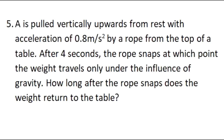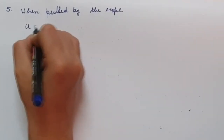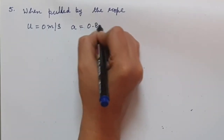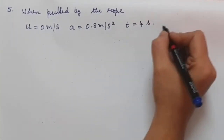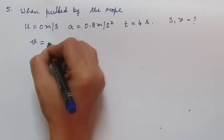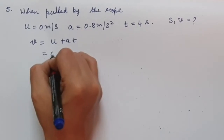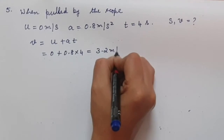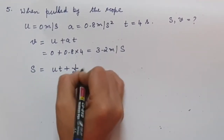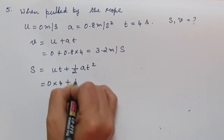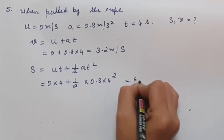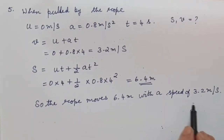Fifth question: a weight is pulled vertically upwards from rest with acceleration 0.8 m/s² by a rope from the top of a table. After 4 seconds, the rope snaps, and the weight travels only under gravity. How long after the rope snaps does the weight return to the table? While pulled by the rope: u = 0 m/s, a = 0.8 m/s², t = 4 s. So v = 0 + 0.8 × 4 = 3.2 m/s and s = 0 × 4 + ½ × 0.8 × 4² = 6.4 m.